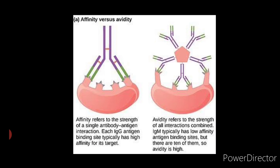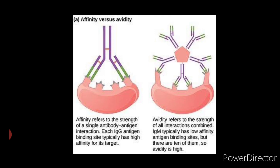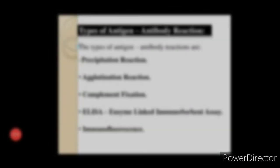The types of antigen-antibody reactions are: first, precipitation reaction; second, agglutination reaction; third, complement fixation; fourth, ELISA — that is enzyme-linked immunosorbent assay; and fifth, immunofluorescence. I will be uploading videos on each and every type of antigen-antibody reaction in detail, so stay tuned and do subscribe my channel.